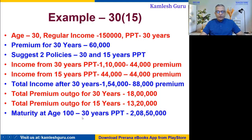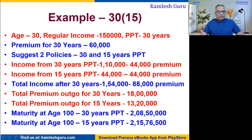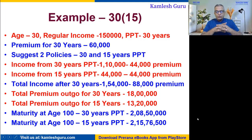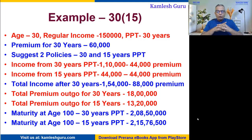Also, the maturity value at age 80 will be 2,08,00,000 for the 30-year policy and 2,15,00,000 for the 15-year policy. So in both ways, the prospect is benefited by splitting the policies.